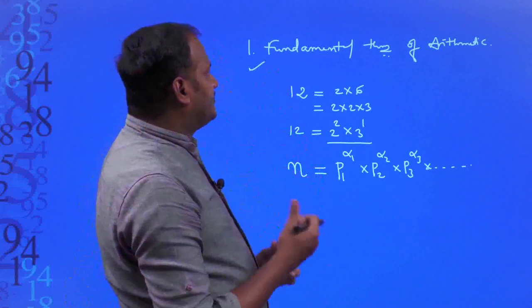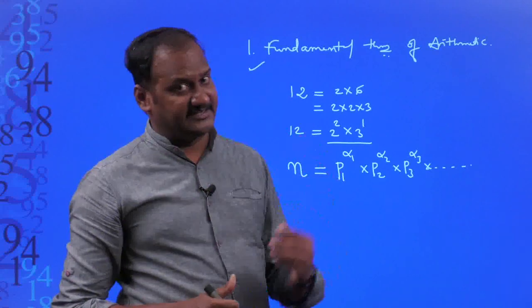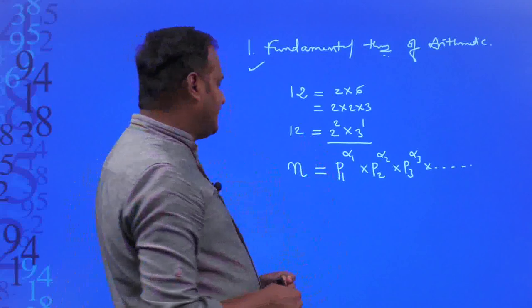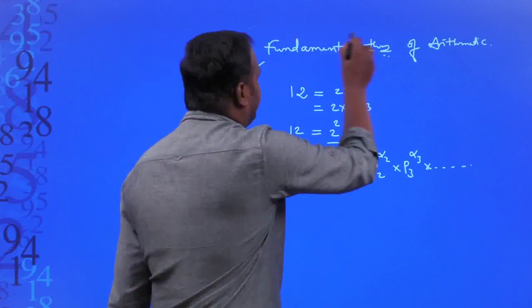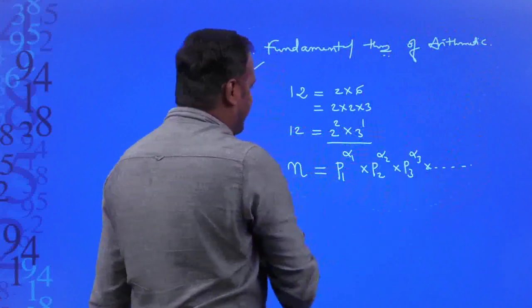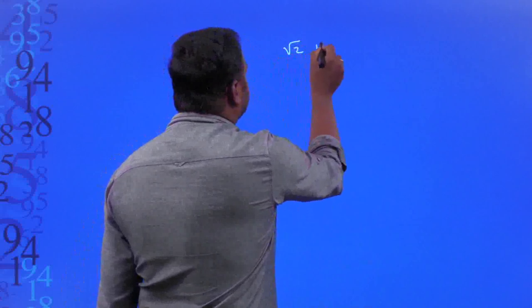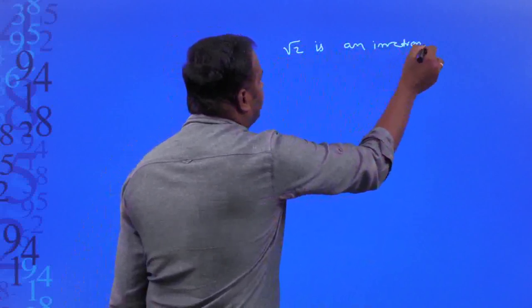Coming to the next concept of the real number system — rational numbers we had already discussed, and now we come to irrational numbers. What do you mean by an irrational number? We had a lot of discussion about irrational numbers in grade 9, and we discussed different kinds of irrational numbers. In grade 10, we have questions like: you have to prove that √2 is an irrational number.